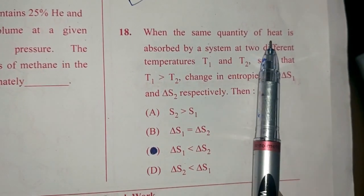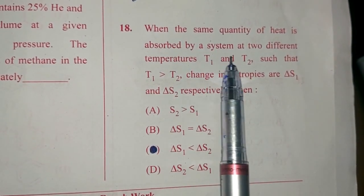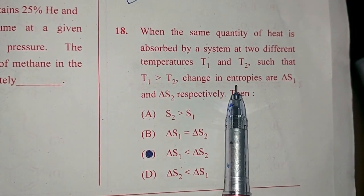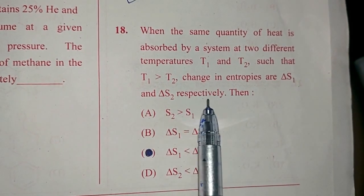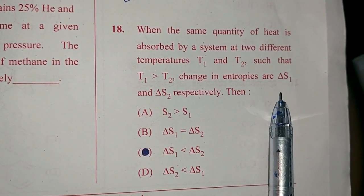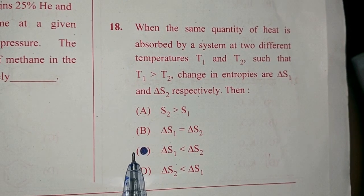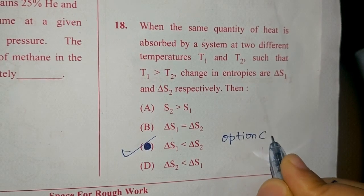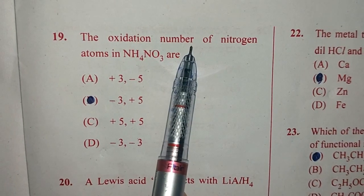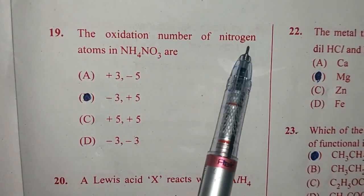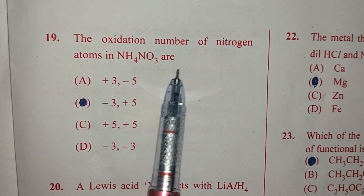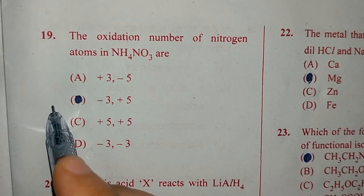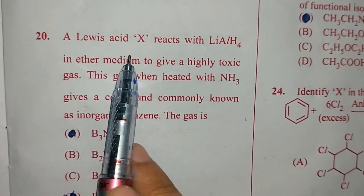Question number 17. The formal charge on central atom in ozone is option D, plus 1. Question number 18. When the same quantity of heat is absorbed by a system at two different temperatures T1 and T2 such that T1 is greater than T2, change in entropies are delta S1 and delta S2 respectively. Then delta S1 is smaller than delta S2. That is option C. Question number 19. The oxidation number of nitrogen atoms in NH4NO3 are answer is option B, minus 3 and plus 5.